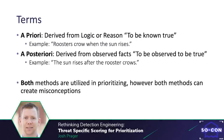Some other terms you may not have heard of are a priori and a posteriori. Both are the root of the word priority. A priori means derived from logic or reason — to be known true. An example is: a rooster crows when the sun rises. An a posteriori is a proven, observed fact. An example is: the sun rises after the rooster crows. Both methods are utilized in prioritization, but both can create misconceptions.